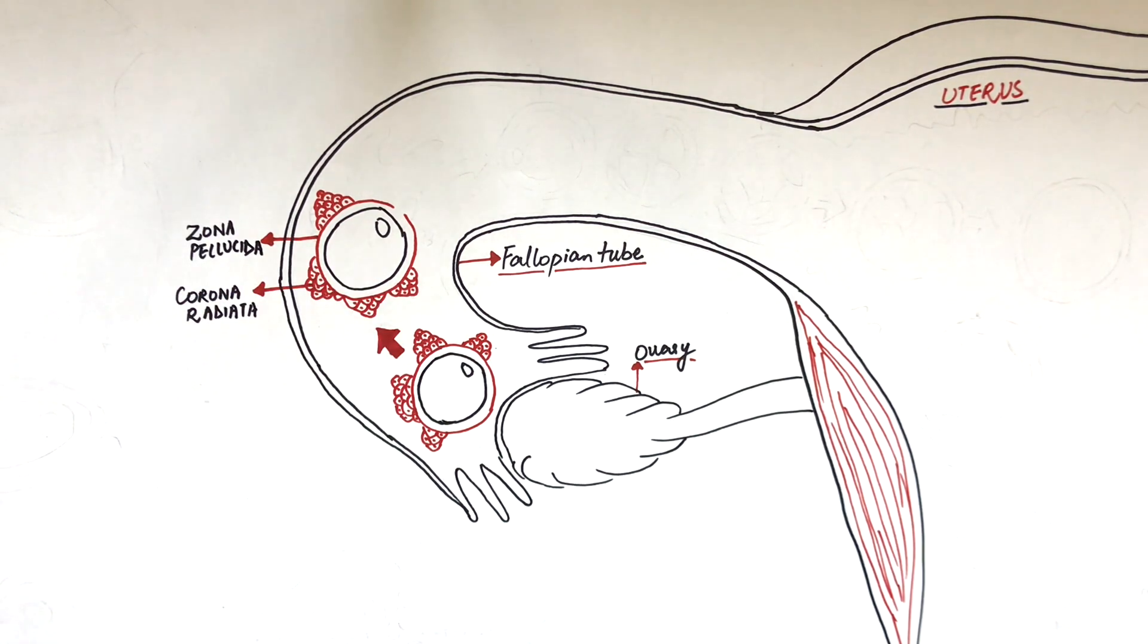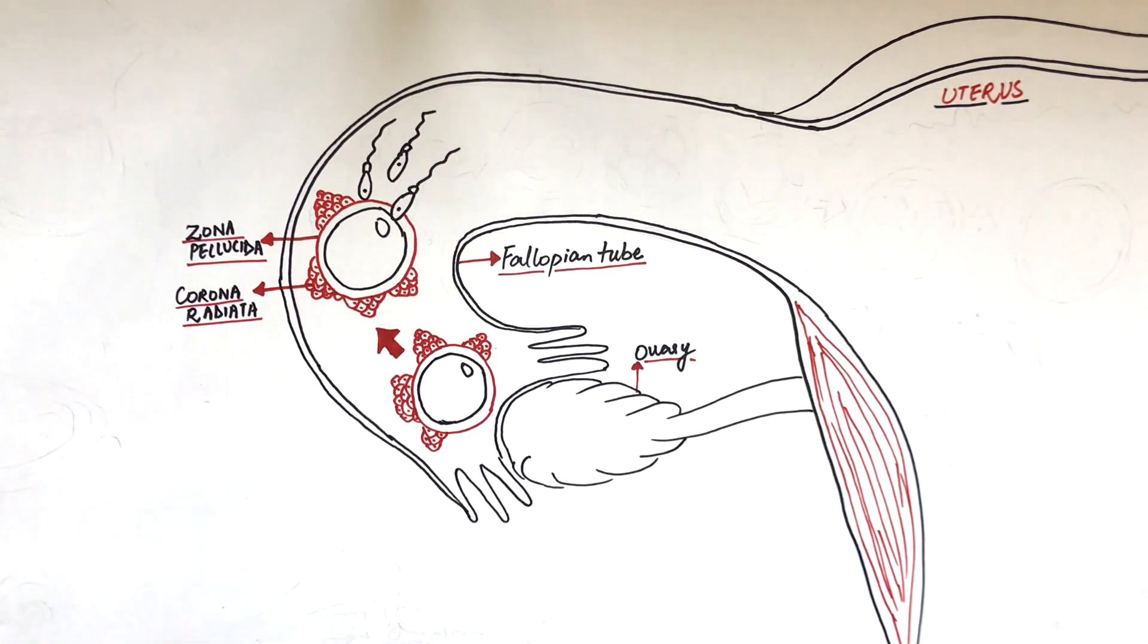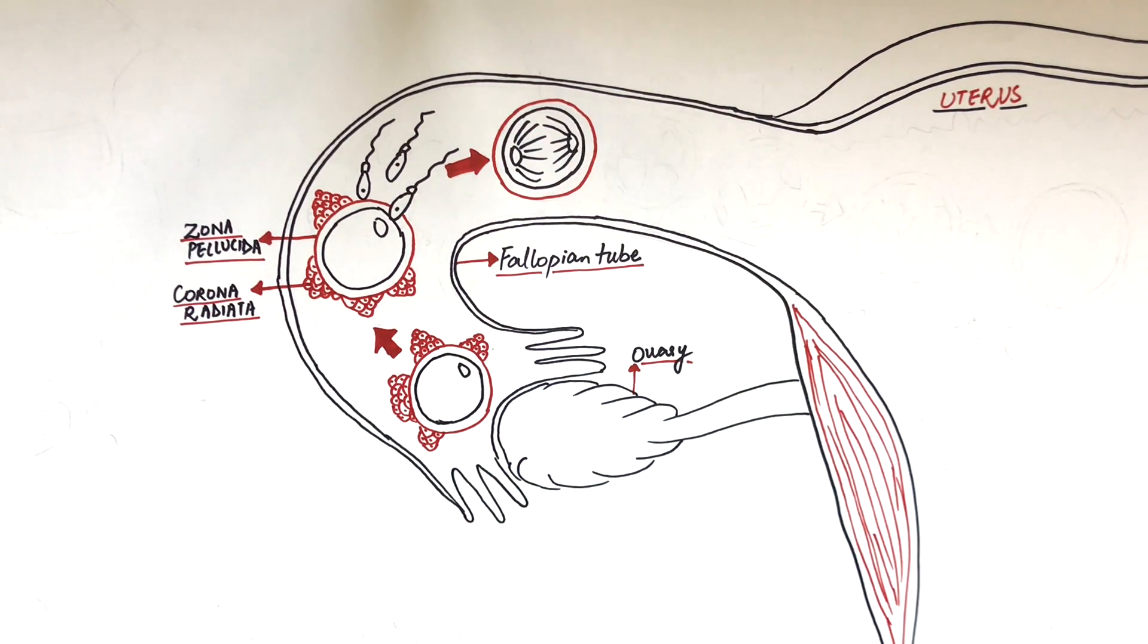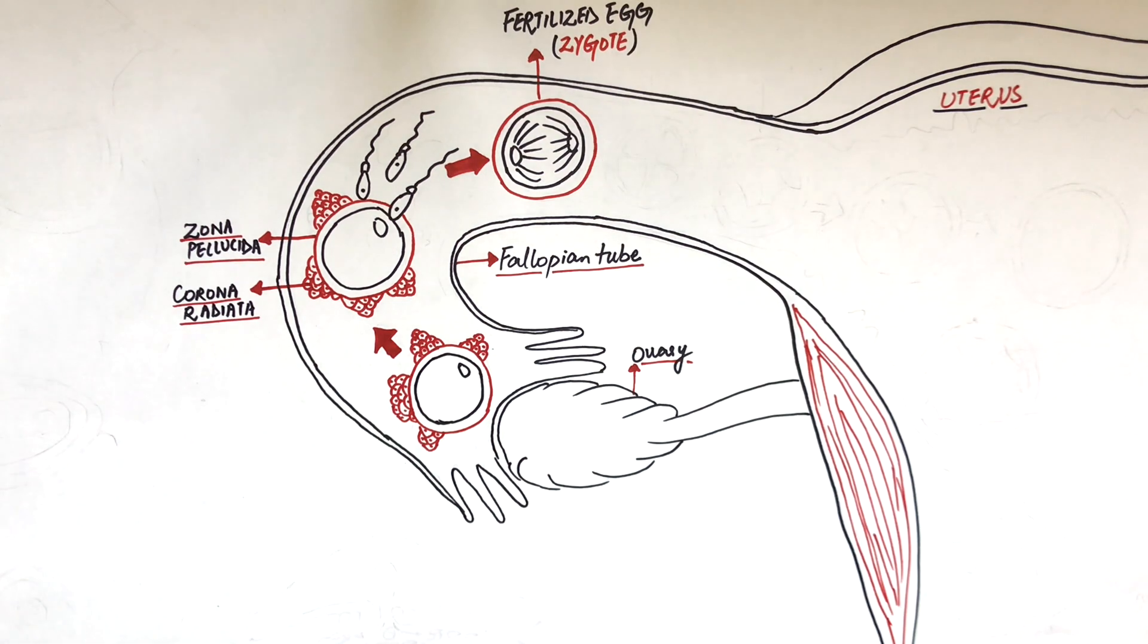In the presence of millions of sperms present in the fallopian tube, only one of them, probably the most active one, will interact with the oocyte and eventually their nuclei will fuse with each other making up a zygote. The zygote is now a fertilized egg.